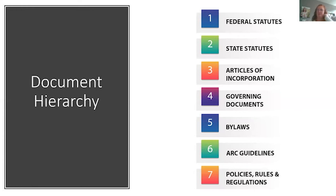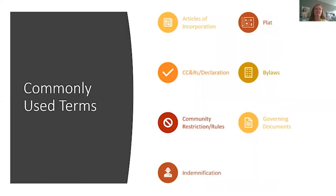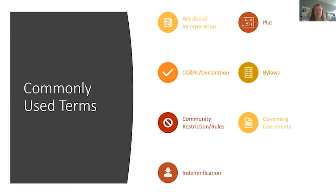Some commonly used terms: a PLAT is the first thing recorded after your articles of incorporation — it's your lot map or, in a condominium, a visual picture of your building with individual units. The PLAT provides critical details including easement information and other parties' responsibilities, such as the city or another association responsible for a right-of-way easement. CC&Rs and declarations we've covered, as have bylaws. Community restrictions and rules are also called resolutions or policies.